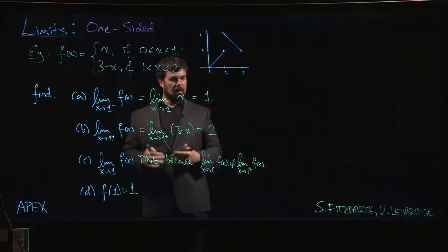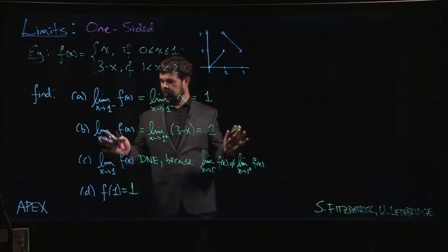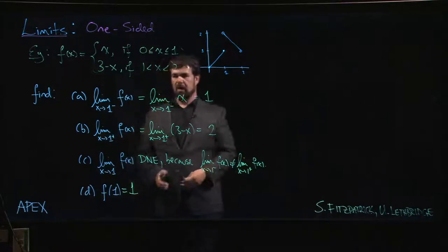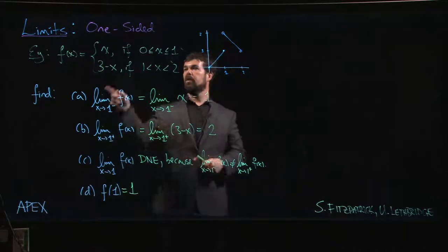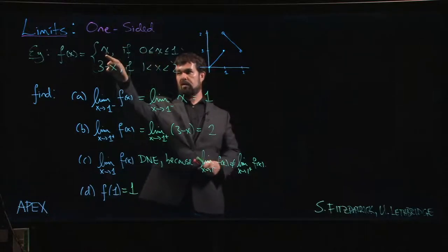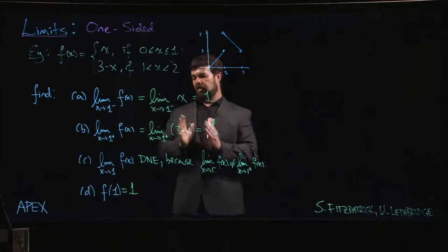All right, we can continue on from here, we could ask a number of other questions if we were so inclined. I think we've probably seen enough for this example but if we wanted to ask some more, we could ask about f(0). F(0) is defined because we have an x equals 0 condition here, we put 0 in, we get 0.